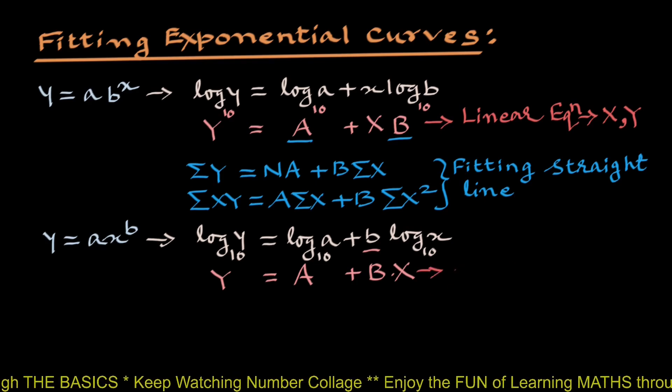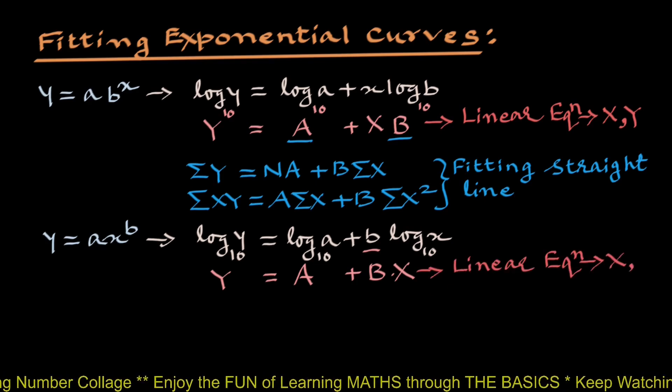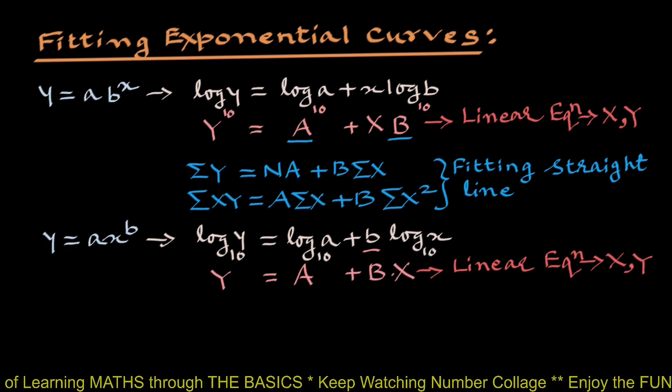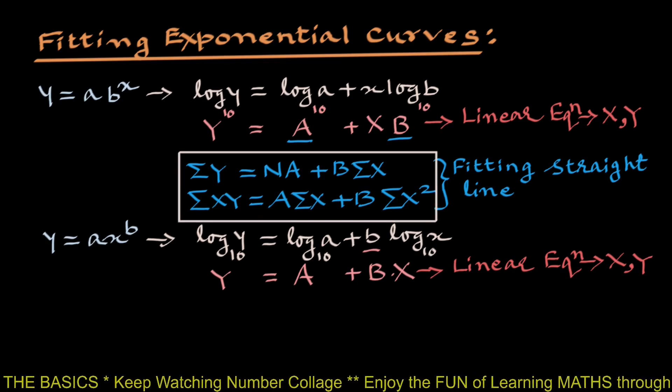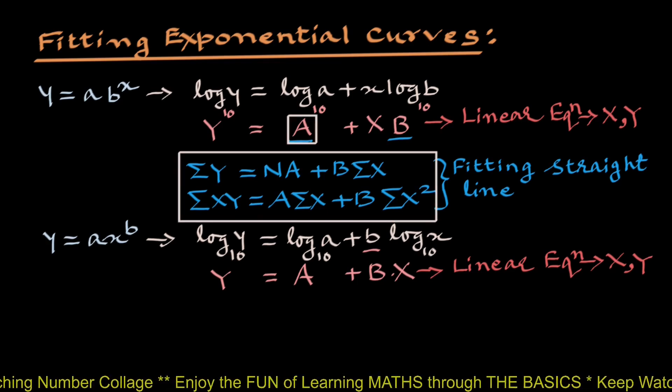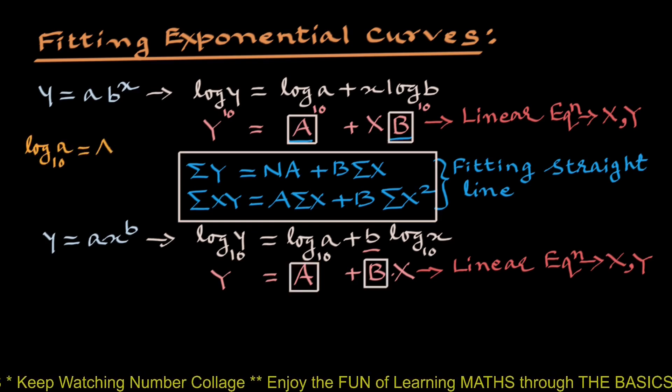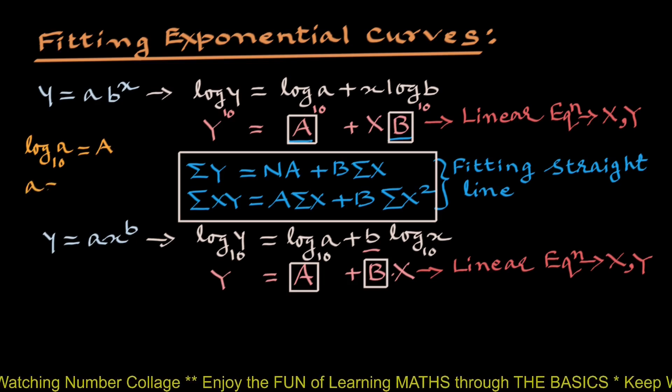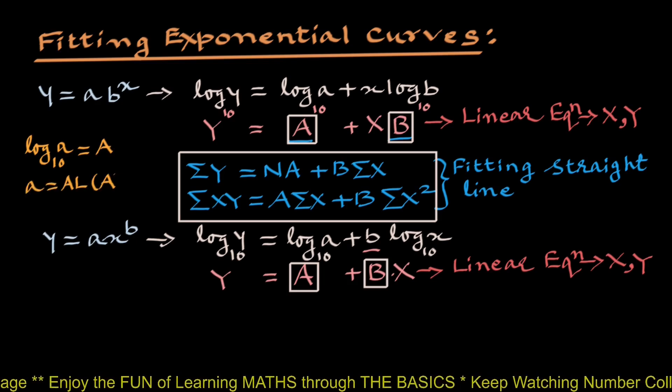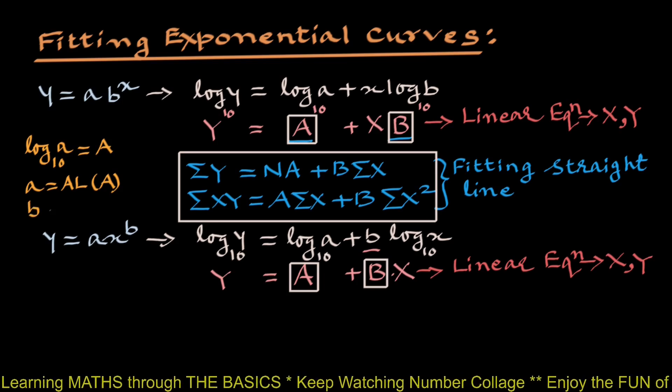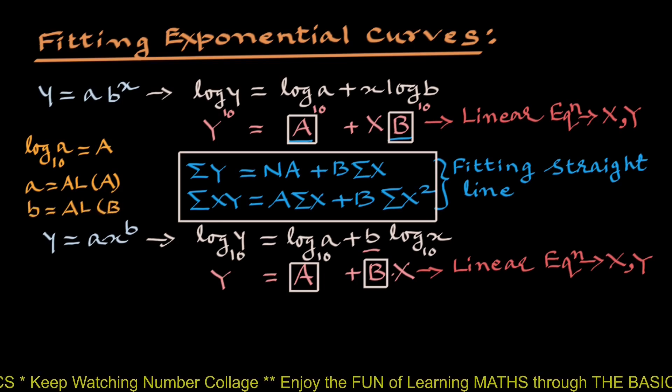We again get linear equation in X and Y and by using these normal equations, we can obtain values of a and b. Now, since log a to the base 10 is capital A, small a will be antilog of capital A. Similarly, b will be antilog of capital B.